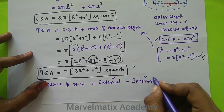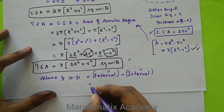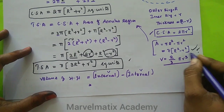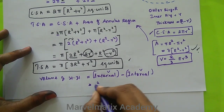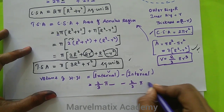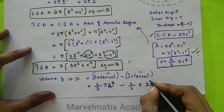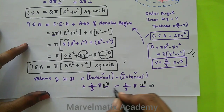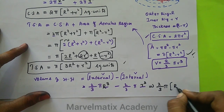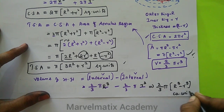If you want the volume of external minus volume of internal, we use 2/3π. So the volume of the hollow hemisphere is 2/3π(R³ minus r³) cubic units. That is the volume of the hollow hemisphere.